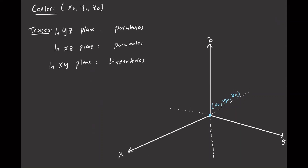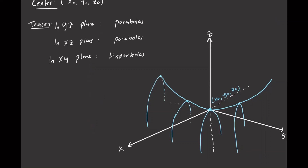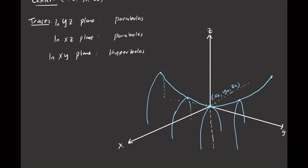Now sketching in the Y,Z plane, I'm looking at parabolas facing up — so it's going to be a parabola like this. And then in the X,Z plane, I have parabolas facing down. So there are parabolas facing down, and there are infinitely many of them — you just have a bunch of parabolas facing down. And then we have the hyperbolas in the X,Y plane.